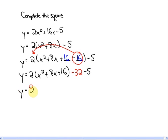And when we simplify and complete this square, we're left with y equals 2. This perfect square here is actually x plus 4 squared. And when we simplify this, it's minus 37. And there is our completed square.